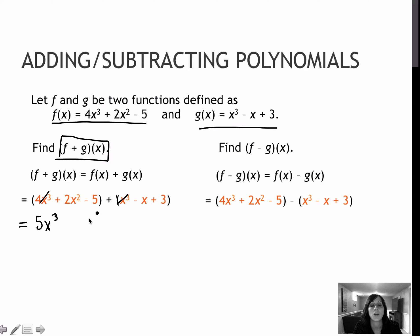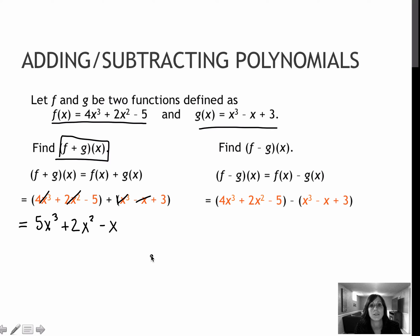Moving on to my next degree down, which is squared: I've got 2x squared but nothing to combine it with, so plus 2x squared. I've got a minus x but nothing to combine it with, so minus x. And then minus 5 and plus 3 combines to minus 2. That's my final answer.